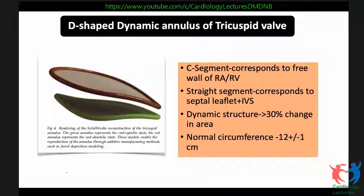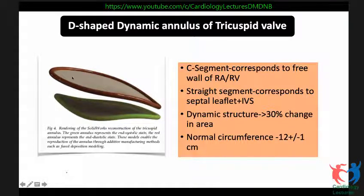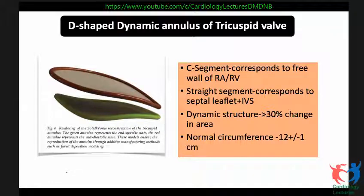The tricuspid valve annulus is a very important structure because most secondary tricuspid regurgitation occurs due to dilatation of the tricuspid annulus and is not really related to the morphology of the leaflets. It is a very dynamic D-shaped annulus, and as seen from this computer rendition, there is nearly a 30% change in size between diastole and systole. The curved segment of the D corresponds to the RA and RV free wall, and the straight septal segment corresponds to the septal leaflet and the interventricular septum. The normal circumference is about 12 centimeters.